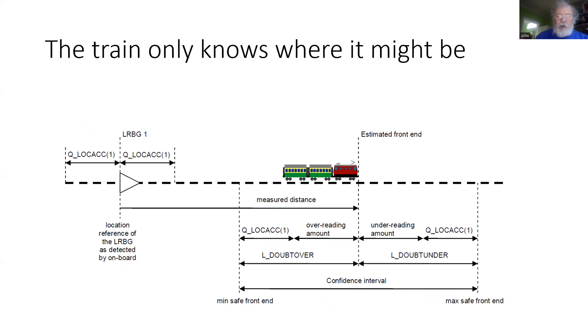comprised of an over-reading amount, which forms L-doubt over, taking also account of the inaccuracy of our origin, and an under-reading amount, leading to L-doubt under, which also takes account of that potential error in the origin.